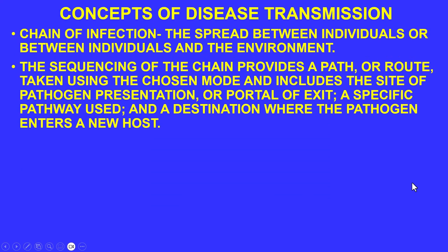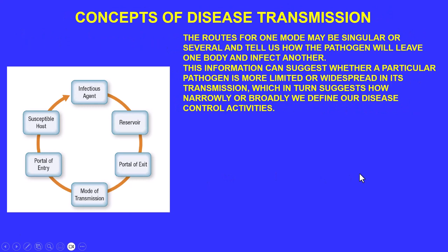The chain of infection describes the spread between individuals or between individuals and the environment. The sequencing of the chain provides a path using the chosen mode of transmission and includes the portal of exit — where the pathogen leaves the source — and the portal of entry — where the pathogen enters a new host. These routes may be singular or several, and tell us how the pathogen will leave the body and infect another.